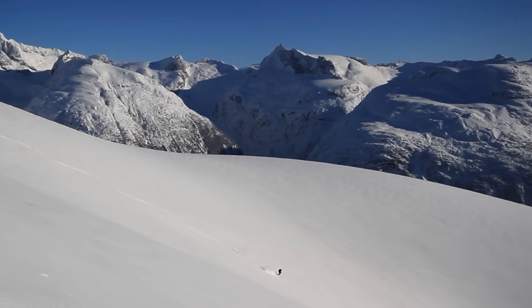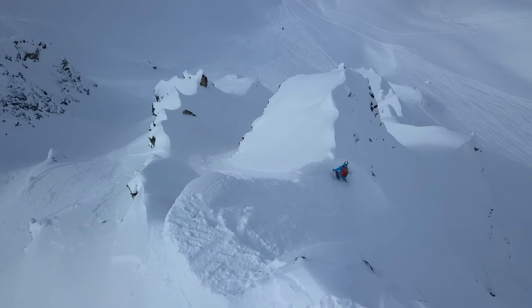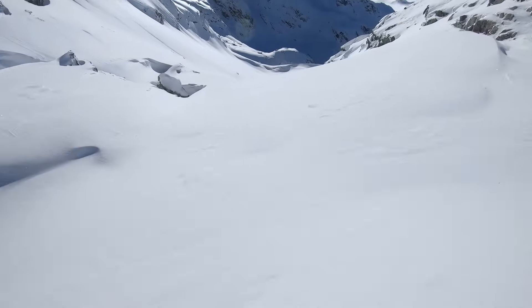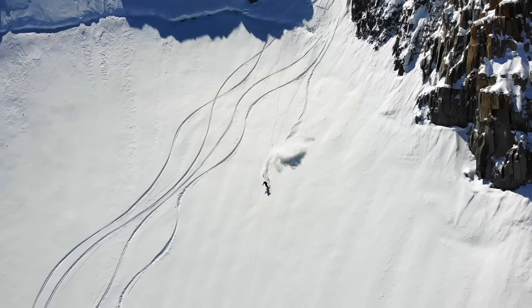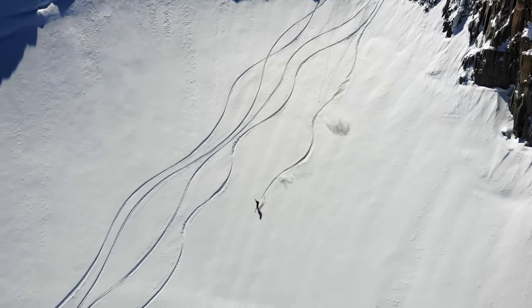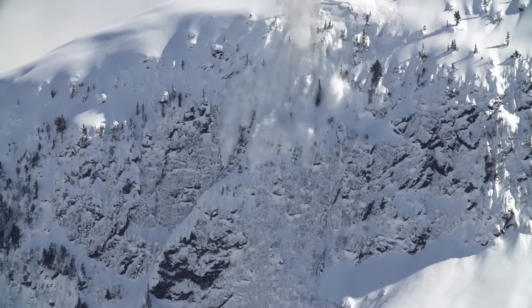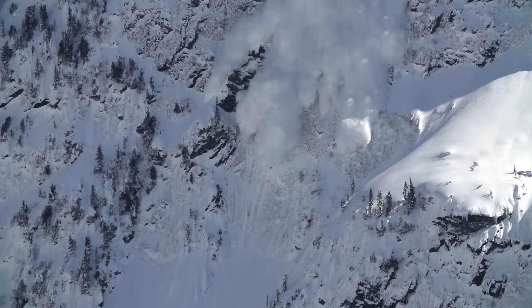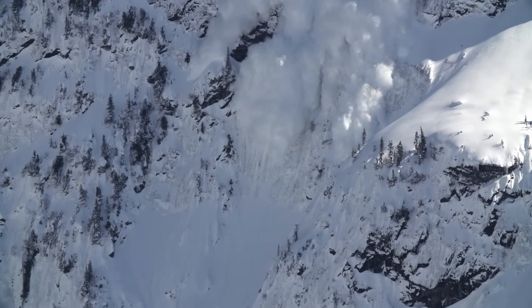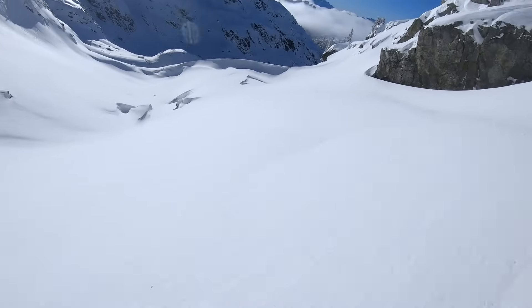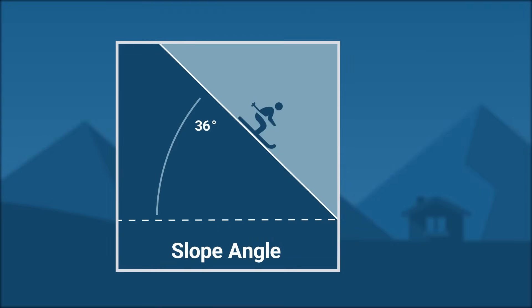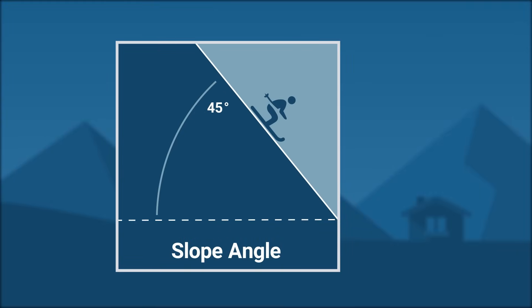For slopes steeper than 45 degrees, the downslope component of stress due to gravity is so great that the snow has a hard time bonding, and cohesive slabs usually don't form because the snow is constantly shedding off. Although less prone to catastrophic avalanches, these slopes have an increased amount of other hazards that require their own cautious approach. For this reason, slab avalanches mostly occur on slopes between 30 and 45 degrees.